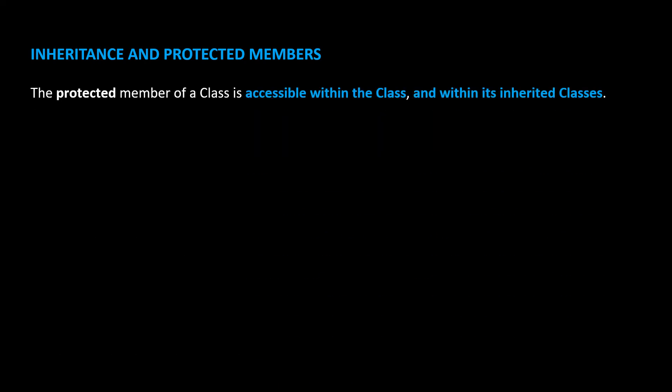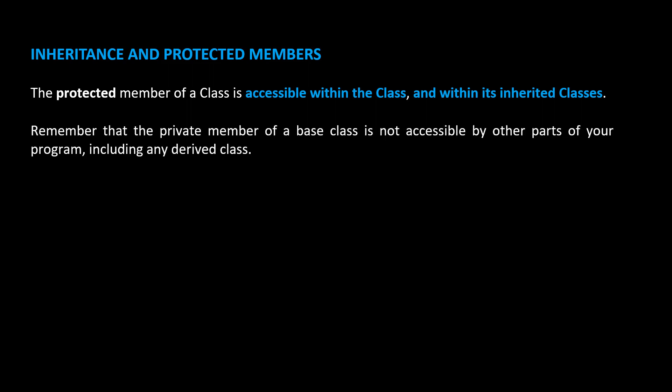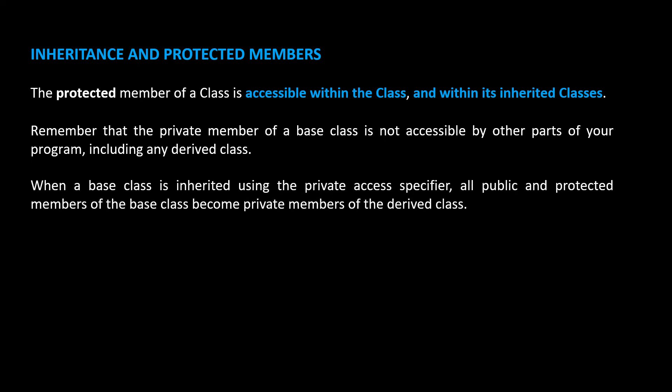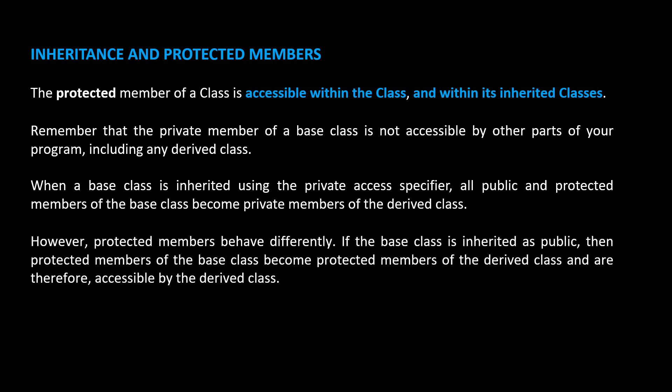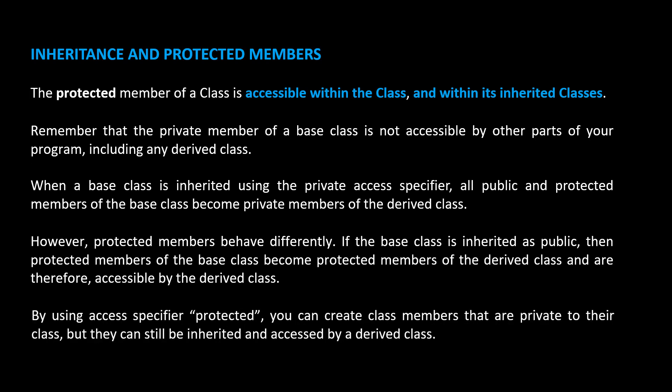We will next look at inheritance and protected members. The protected member of a class is accessible within the class and within its inherited classes. Remember that the private member of a base class is not accessible by other parts of your program, including any derived class. When a base class is inherited using the private access specifier, all public and protected members of the base class become private members of the derived class. However, protected members behave differently. If the base class is inherited as public, then protected members of the base class become protected members of the derived class and are therefore accessible by the derived class. By using access specifier protected, you can create class members that are private to their class, but they can still be inherited and accessed by a derived class.